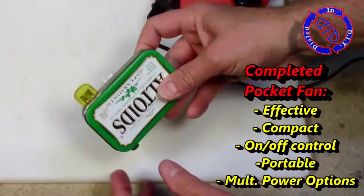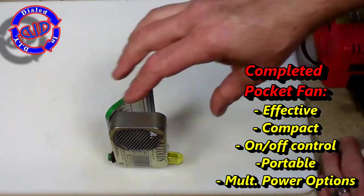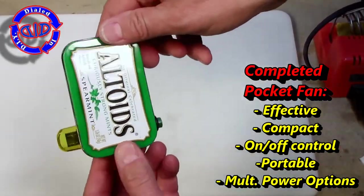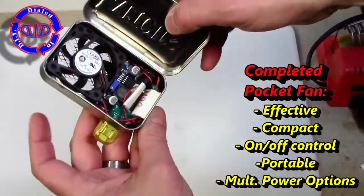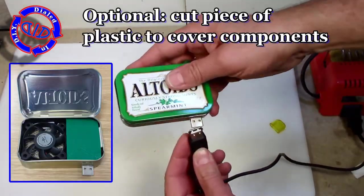With this done, I now have a compact pocket fan that's very effective. It is compact. I have on-off control. It's portable. And best of all, I have the convenience of using a 12-volt fan on a lot of different available USB 5-volt power sources.